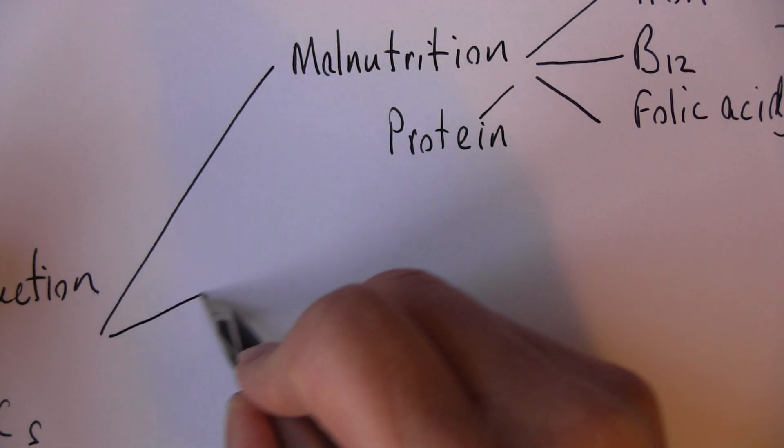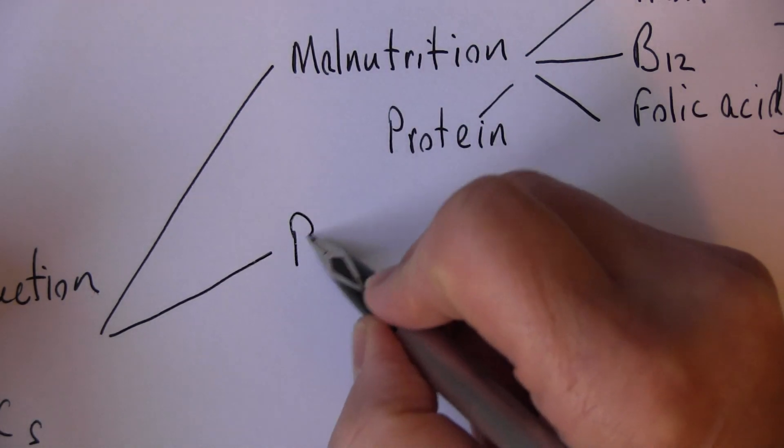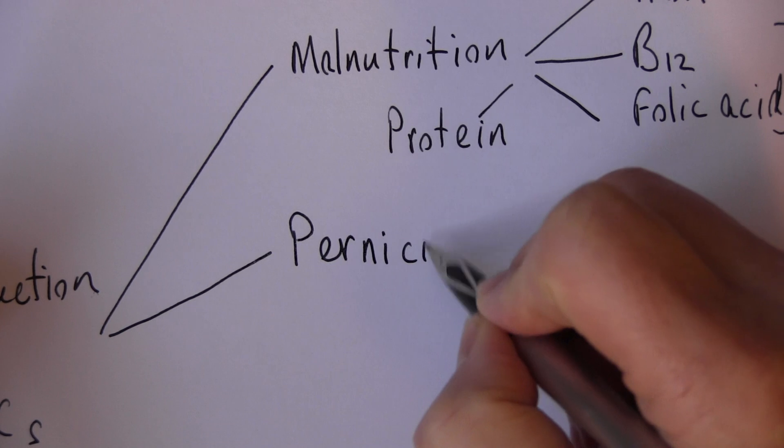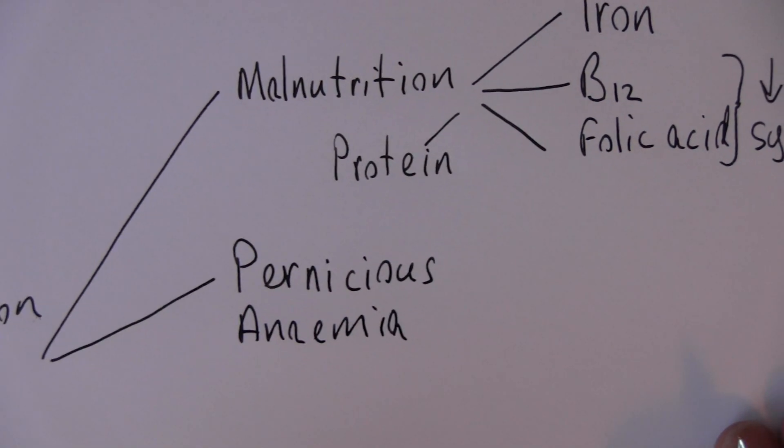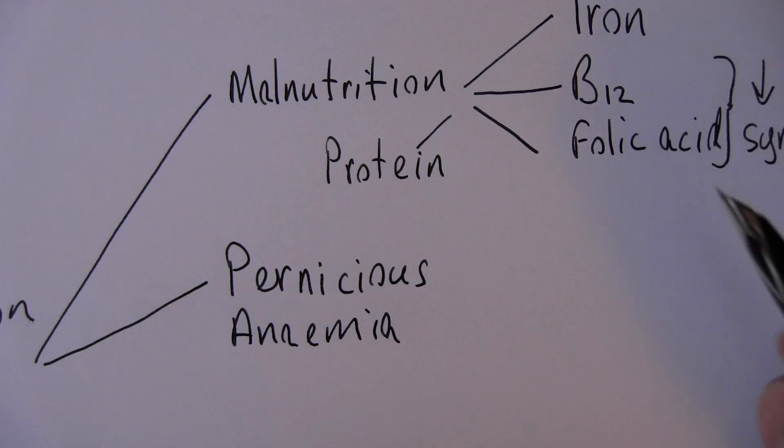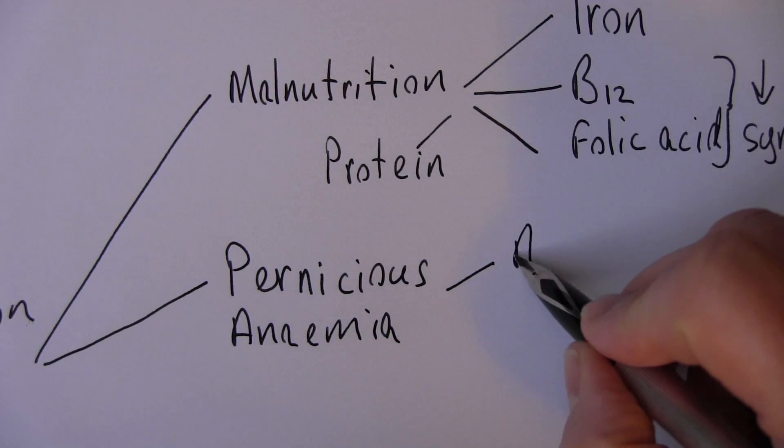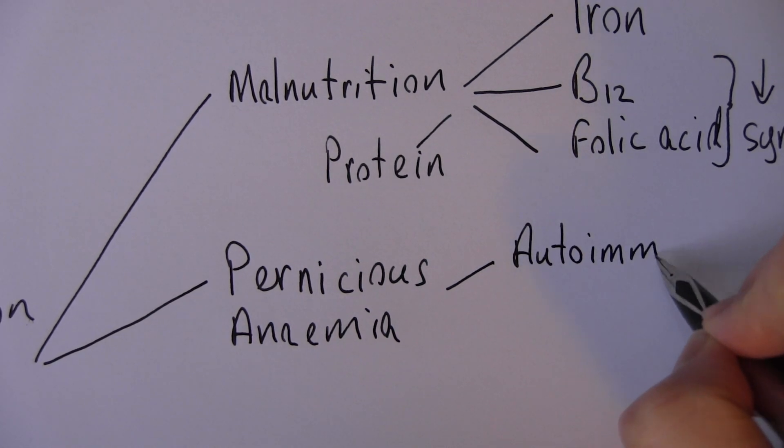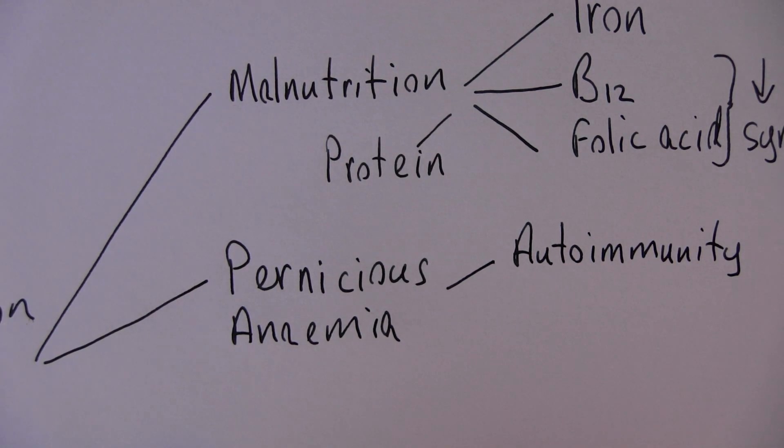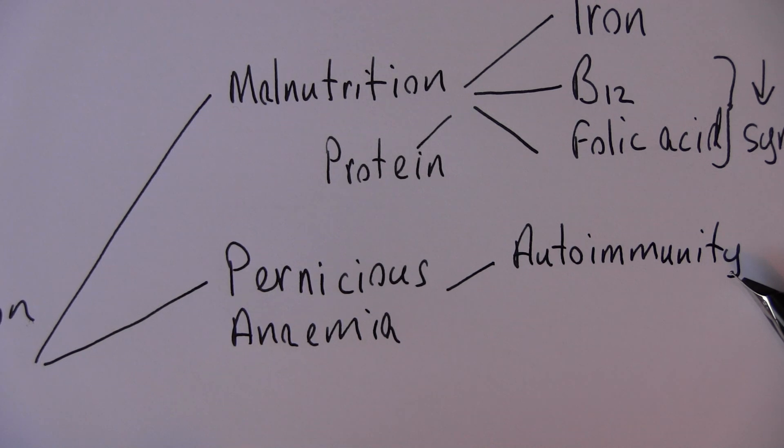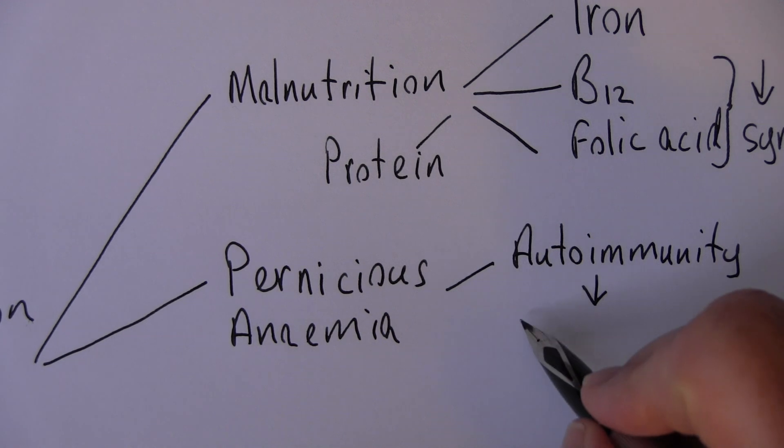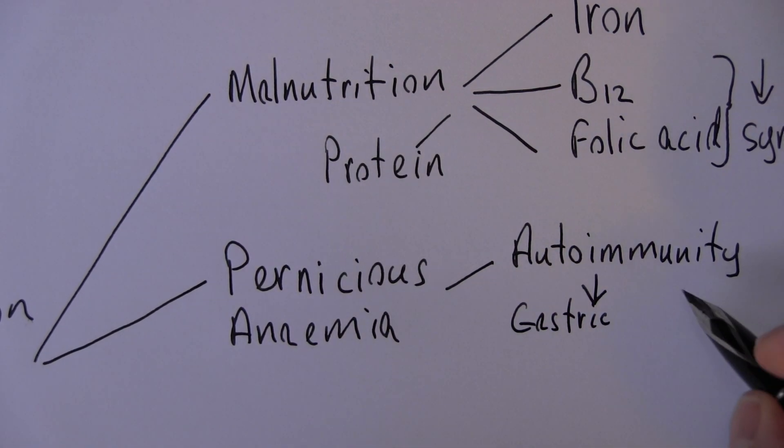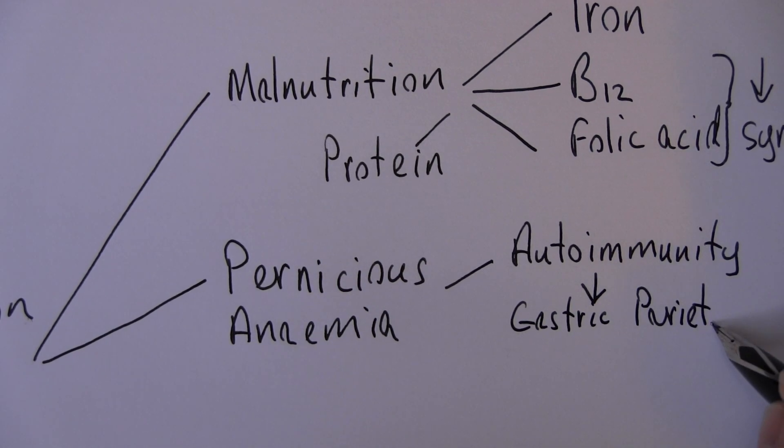The next one is pernicious anemia. This one's tied up with the B12 in a sense, but pernicious anemia, the difference is that this is autoimmune. Auto means self. In autoimmunity, the body's own immune system is attacking its own tissues, and in this case the autoimmune attack is attacking the gastric parietal cells.